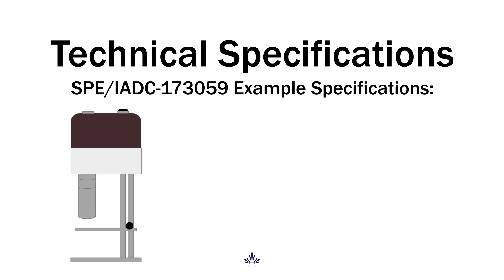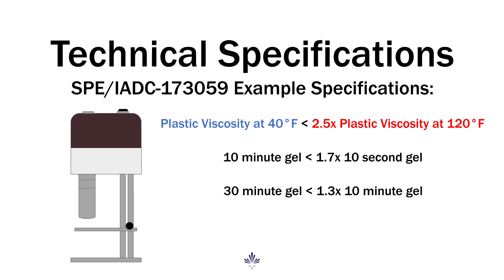In this example, plastic viscosity at 40 degrees Fahrenheit must be less than 2.5 times the plastic viscosity at 120 degrees Fahrenheit. The 10-minute gel must be less than 1.7 times the 10-second gel. The 30-minute gel must be less than 1.3 times the 10-minute gel. And all gels at 40 degrees Fahrenheit must be less than 1.2 times the same reading at 120 degrees Fahrenheit.